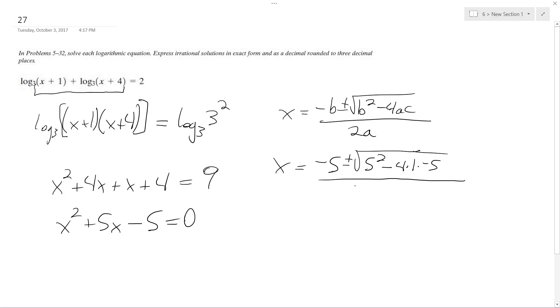All over 2 times 1, and this simplifies down to negative 5 plus or minus 3 root 5 over 2.